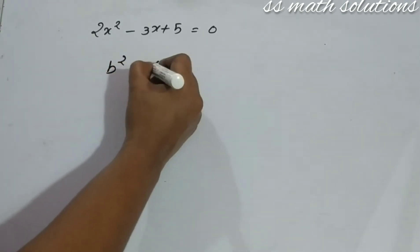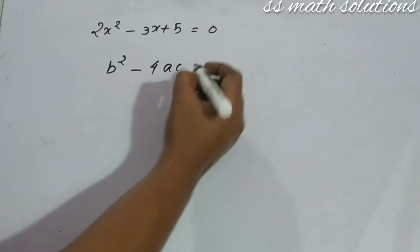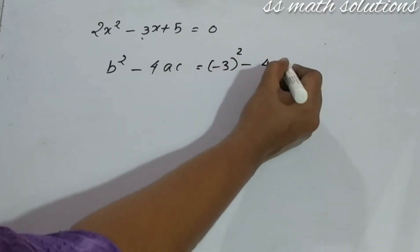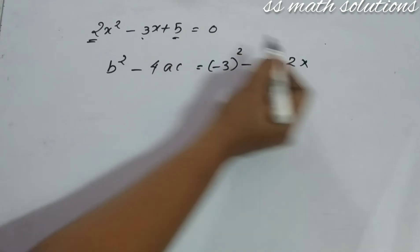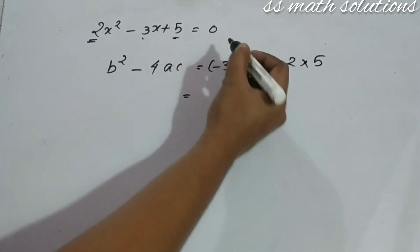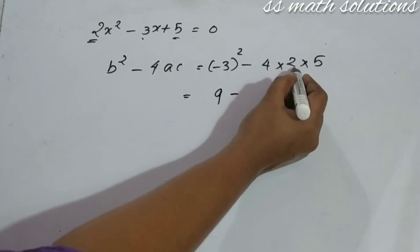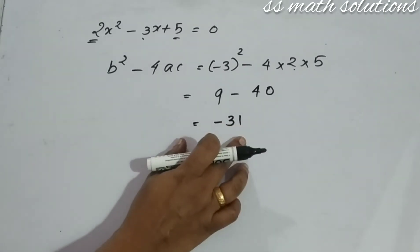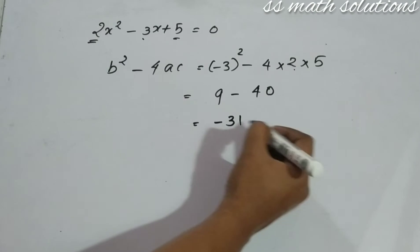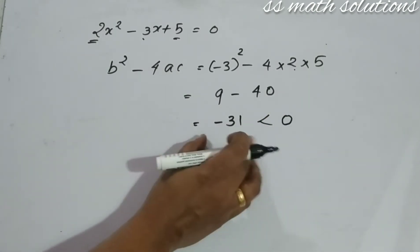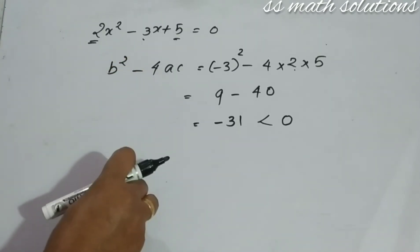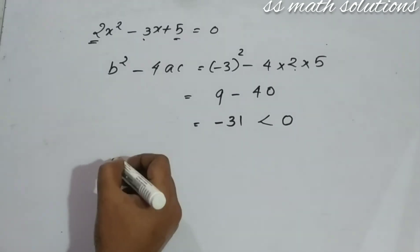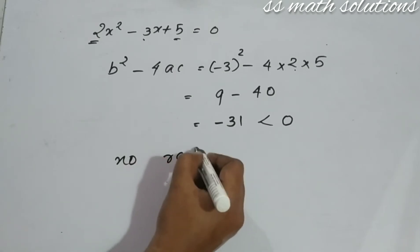The discriminant B squared minus 4AC: here B is minus 3, so it is minus 3 squared, minus 4 times A which is 2, times C which is 5. That equals 9 minus 4 times 2 times 5, which is 9 minus 40, giving us minus 31. Since minus 31 is less than zero, B squared minus 4AC is less than zero.